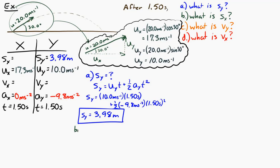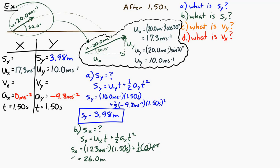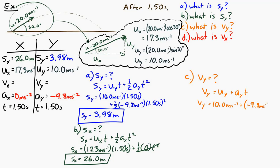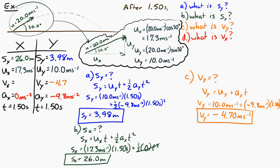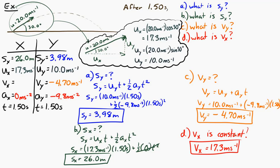For part B, horizontal displacement uses the same kinematic equation but only horizontal information. The horizontal displacement is 26 meters. For the vertical velocity, I use V equals u plus at with only vertical values — the vertical velocity after 1.5 seconds is negative 4.70 meters per second. For the horizontal velocity, remember it's constant, so the horizontal velocity after 1.5 seconds is 17.3 meters per second.